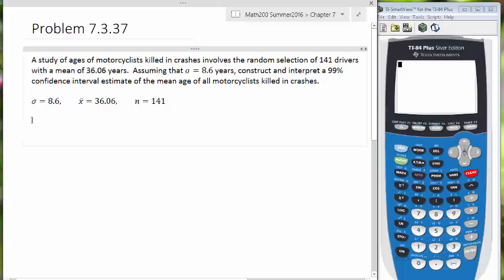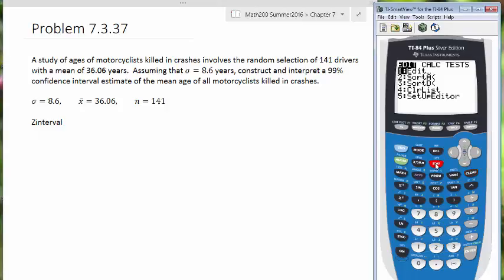Because our sigma is given, we can actually use our z interval and our z distribution, and we're just going to punch all this information into our calculator. So let's go to our calculator and hit stat. Let's go to tests and look for z interval. That's number 7. I can scroll down there, or I can simply hit number 7.